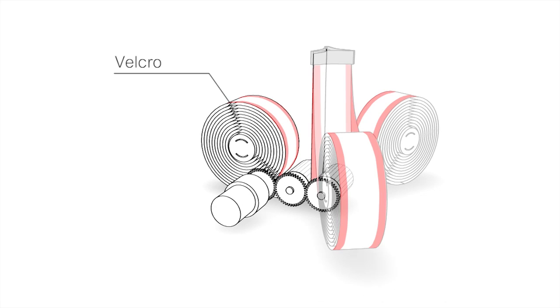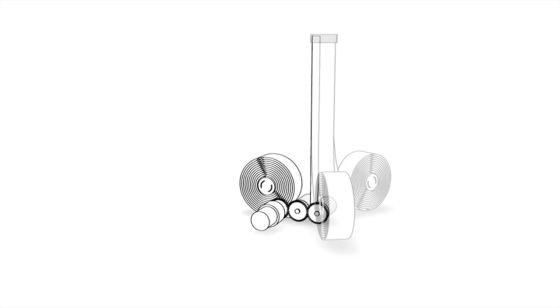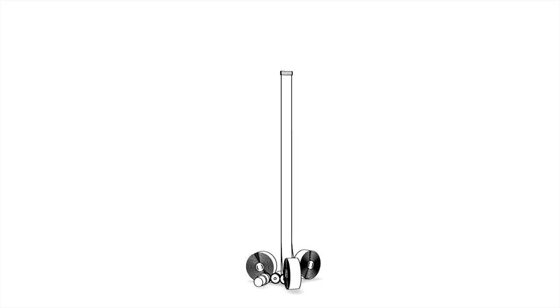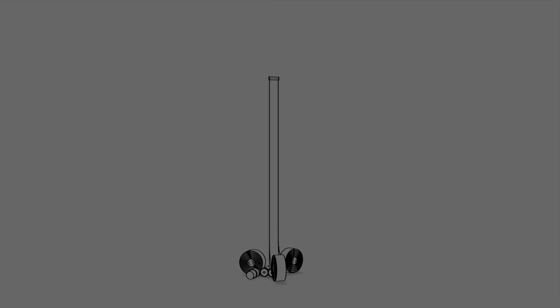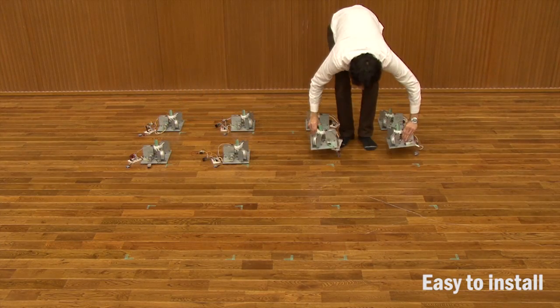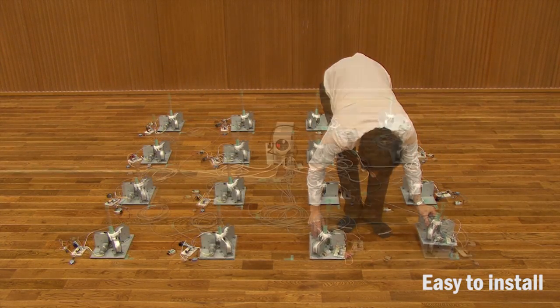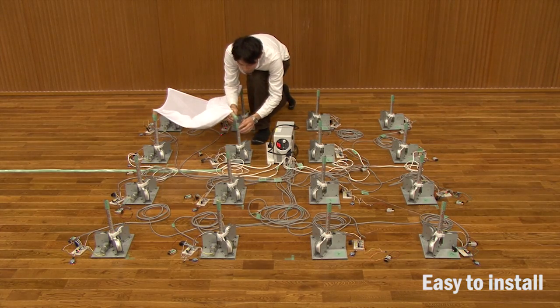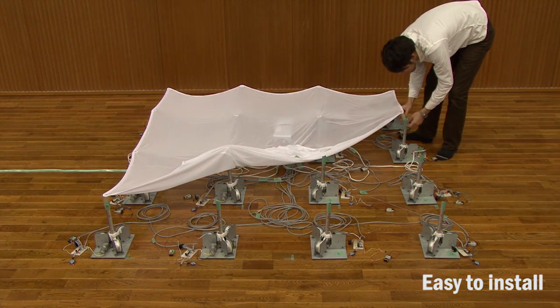Each line is fixed with velcro running lengthwise. As the lines are reeled out they fasten to one another to form a rigid rod. The compact body of the unit's actuator allows for easy installation in diverse spaces. The individual modules can be set very close together or far apart.